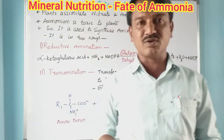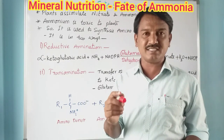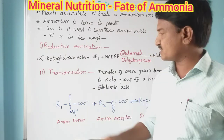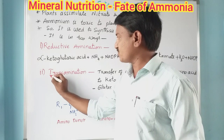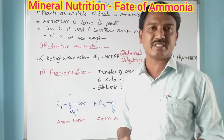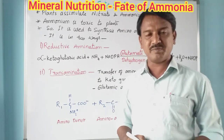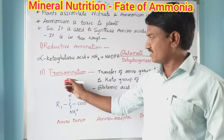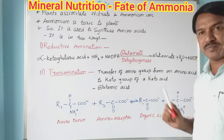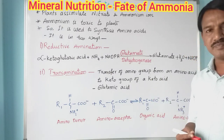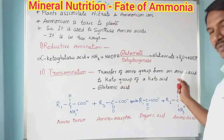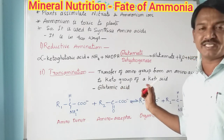This process is catalysed by glutamate dehydrogenase enzyme. In the second step — transamination — 'trans' means transfer, 'amination' means amino group. It is the transfer of an amino group between two substrates: transfer of amino group from an amino acid to the keto group of a keto acid.